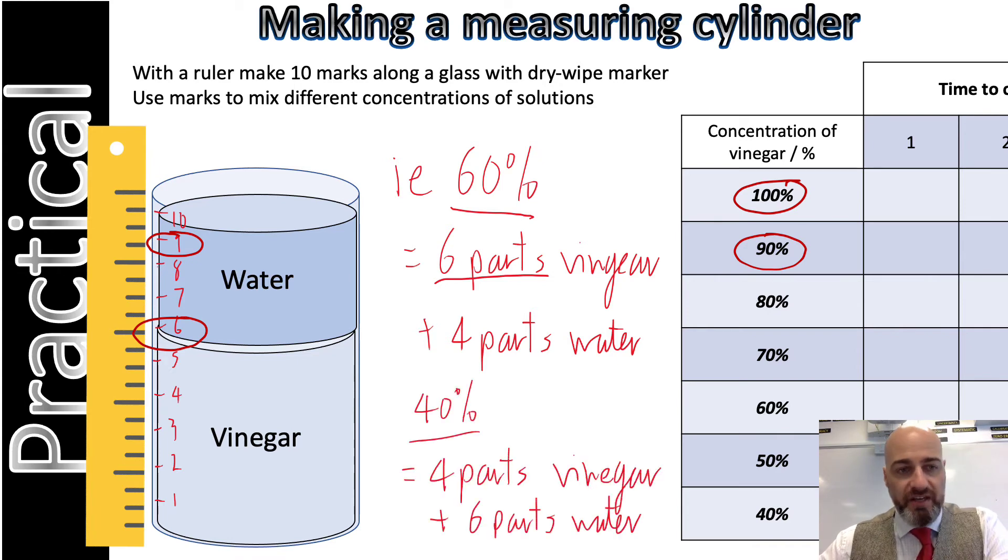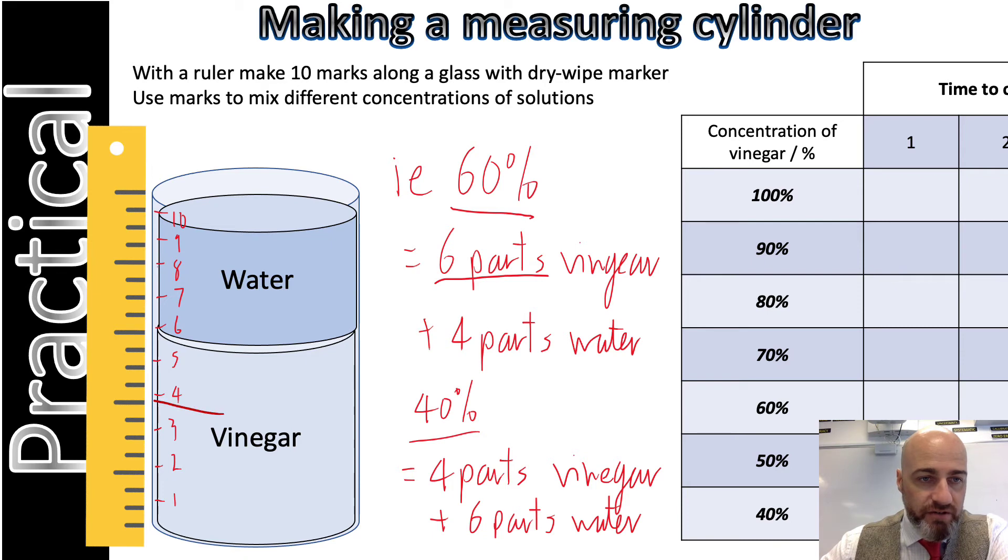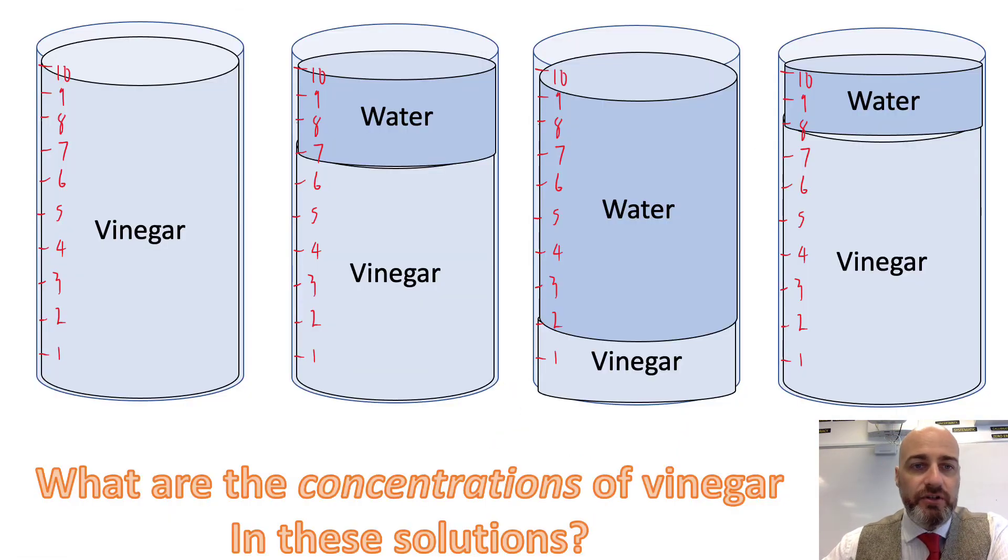So wherever you mix it to, if you mix the vinegar to interval number four and fill the rest up with water, that would be 40% vinegar solution. Have a look at these mixtures here and see if you can figure out what percentage of concentration they are. The first one is obviously 100%. Figure out what the other ones are?